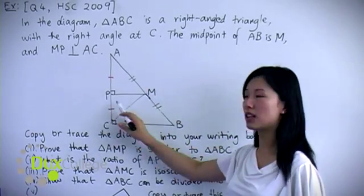From part three, we can label the equal sides on the diagram. For part four, we need to show that triangle ABC can be divided into two isosceles triangles. Clearly, we have two isosceles triangles: triangle AMC and triangle CMB. Both are isosceles triangles.